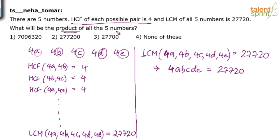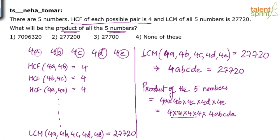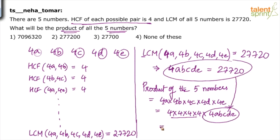Now he asks for the product of all five numbers. The numbers are 4A, 4B, 4C, 4D, and 4E. So the product = 4A × 4B × 4C × 4D × 4E = (4×4×4×4×4) × (A·B·C·D·E) = 4^5 × (A·B·C·D·E). Since 4·A·B·C·D·E = 27,720, we substitute: 4^4 × 27,720 = 256 × 27,720. The answer comes out to be 70,96,320, which is option 1.